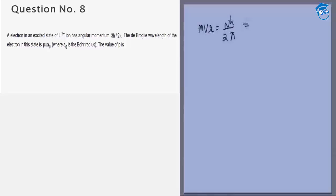Now we want to find the de Broglie wavelength. De Broglie wavelength lambda is given by h by MV. From this equation we can see h by MV is 2πr by n.